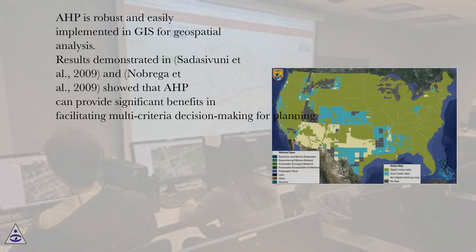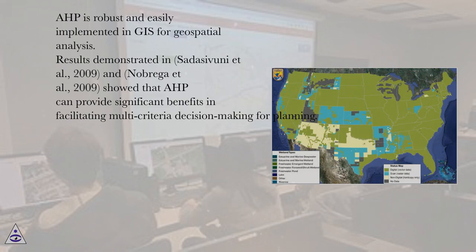AHB is robust and easily implemented in GIS for geospatial analysis. Results demonstrated in Sadasivuni et al. 2009 and Nabriga et al. 2009 showed that AHB can provide significant benefits in facilitating multi-criteria decision-making for planning.